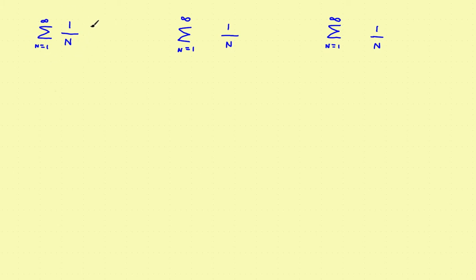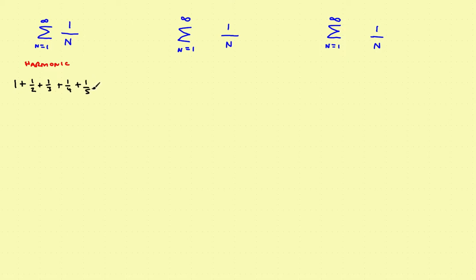Let's take a look at one of the simplest but most important examples: the harmonic series. We've used this several times in the past. If you write out the terms, they look like this: the first term is 1, then 1/2 plus 1/3 plus 1/4 plus 1/5, and so on to infinity. That is a positive series because all the terms are positive.